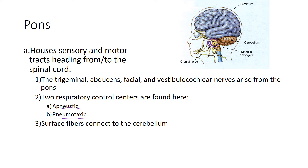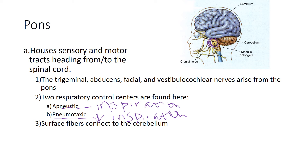The apneustic center is important for inspiration. The pneumotaxic center inhibits — or decreases — inspiration, and is therefore involved in respiration. Another feature of the pons is that fiber tracts connect the cerebellum with the pons, so that information can travel from the cerebellum up into the cerebral cortex.